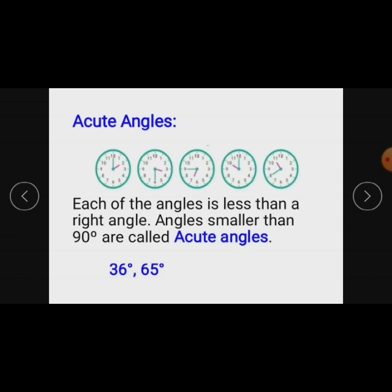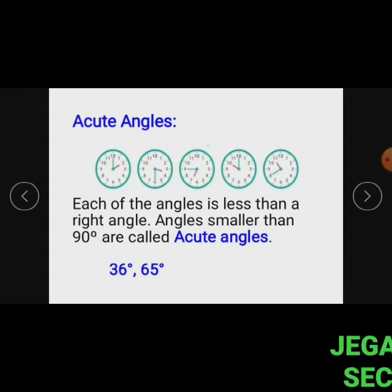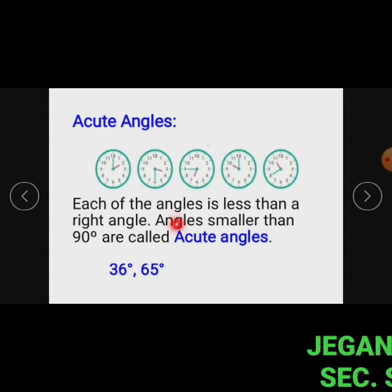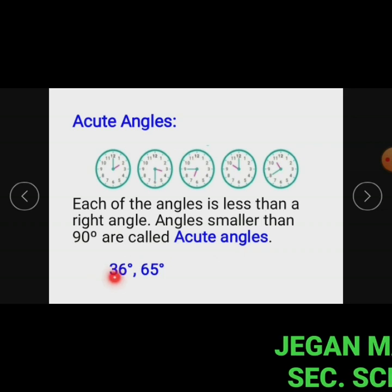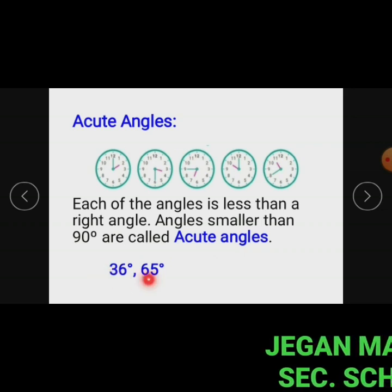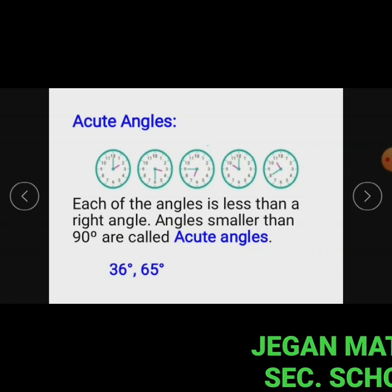Acute angles: in this figure, the clock shows each of the angles is less than a right angle. Angles smaller than 90 degrees are called acute angles. For example, 36 degrees and 65 degrees are acute angles.